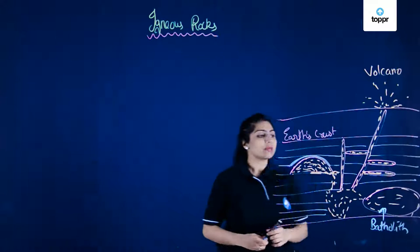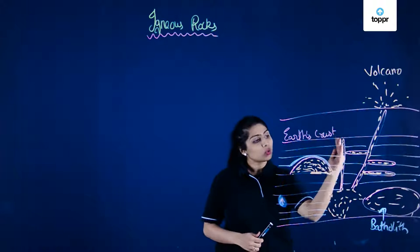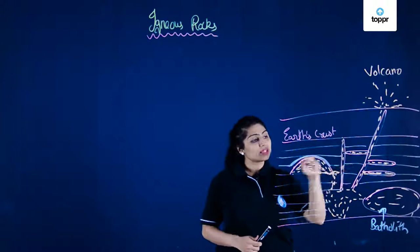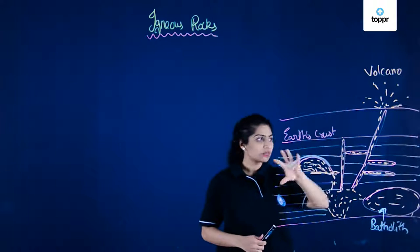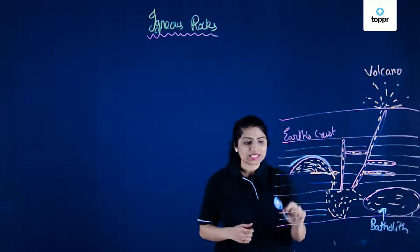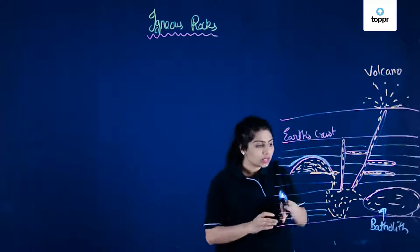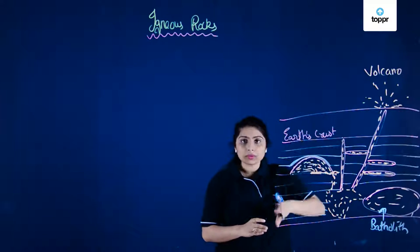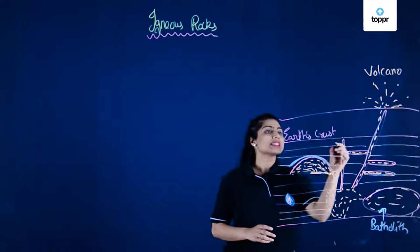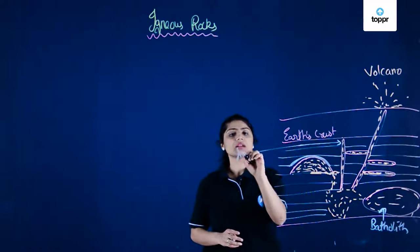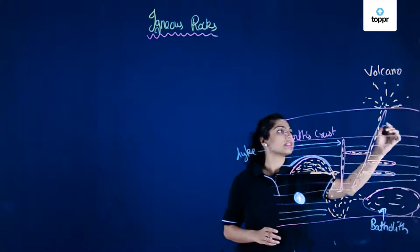Sometimes molten magma rises up and goes vertically between the layers of existing rocks — called the country rocks. The magma fills the cracks and fissures between these layers and, when it cools and hardens there, it forms something called a dike. These vertical intrusions are dikes, which are also intrusive igneous rocks.